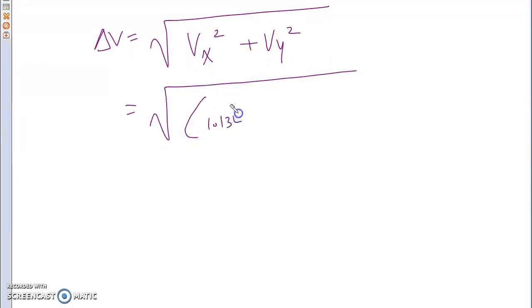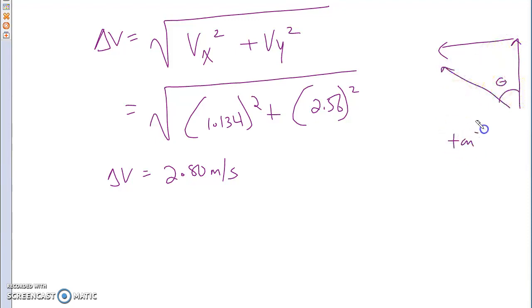And you end up with the following. So you're gonna have delta V, which is made up of VX squared plus VY squared. And you end up with 1.134 squared plus 2.56 squared. And you get delta V, which is 2.80 meters per second. We're gonna do tan inverse. So we had north, we had west. And this was our direction. So tan inverse, 1.134 divided by 2.56. And you end up with an angle which was 24 degrees west of north.